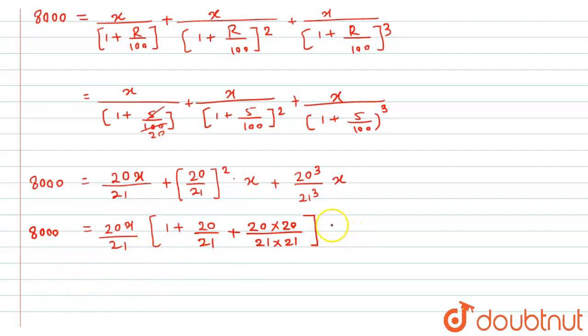Ab agar hum yahan se further simplify kar le, on further simplifying it, 8000, it would become equal to 20 divided by 21 into x. In bracket, yahan se agar hum denominator common kar le, 21 multiply by 21 will give me 441. Aur, us tarah se upar ki jo submission hogi, woh 1261 ke equal ho jayega.